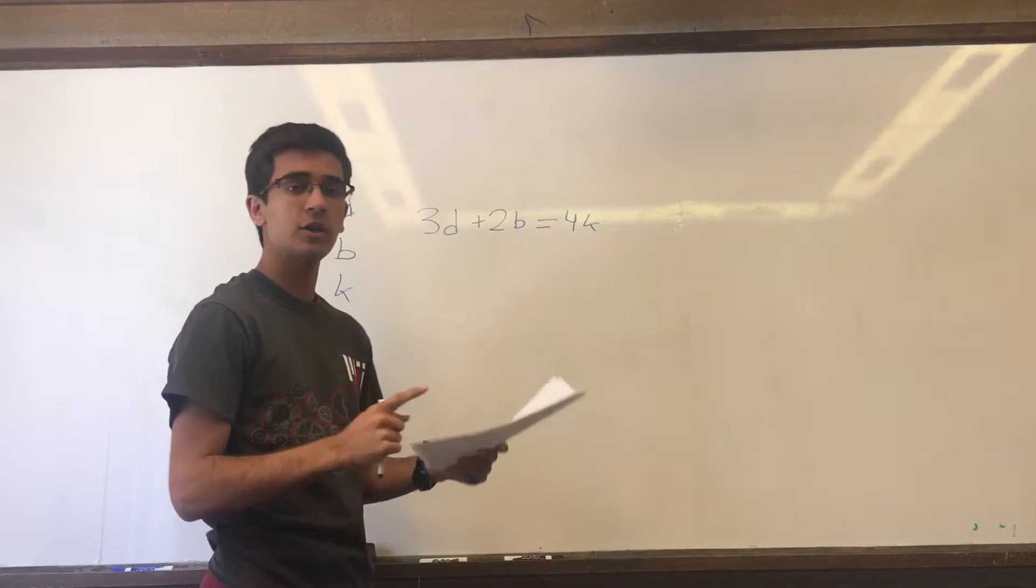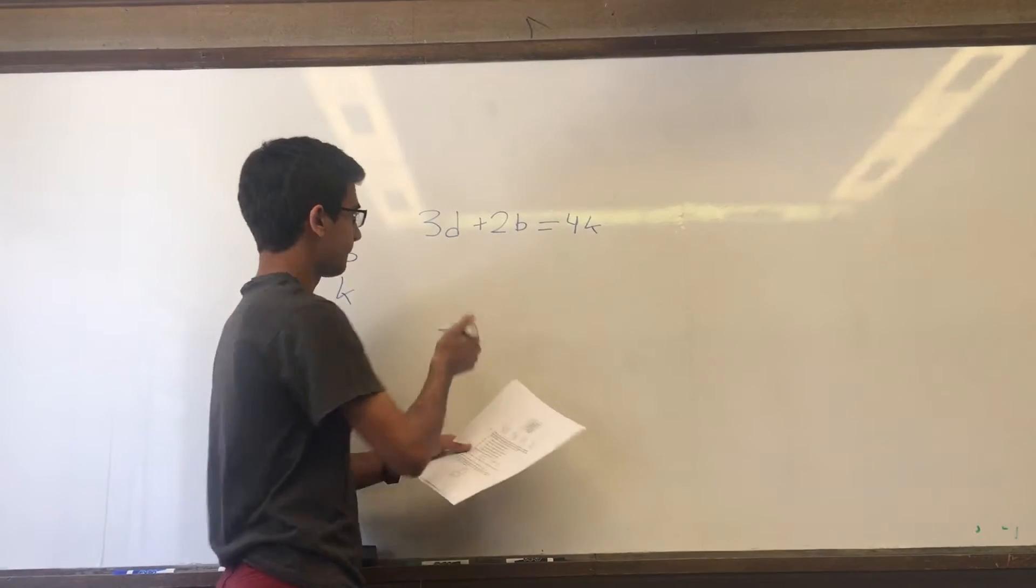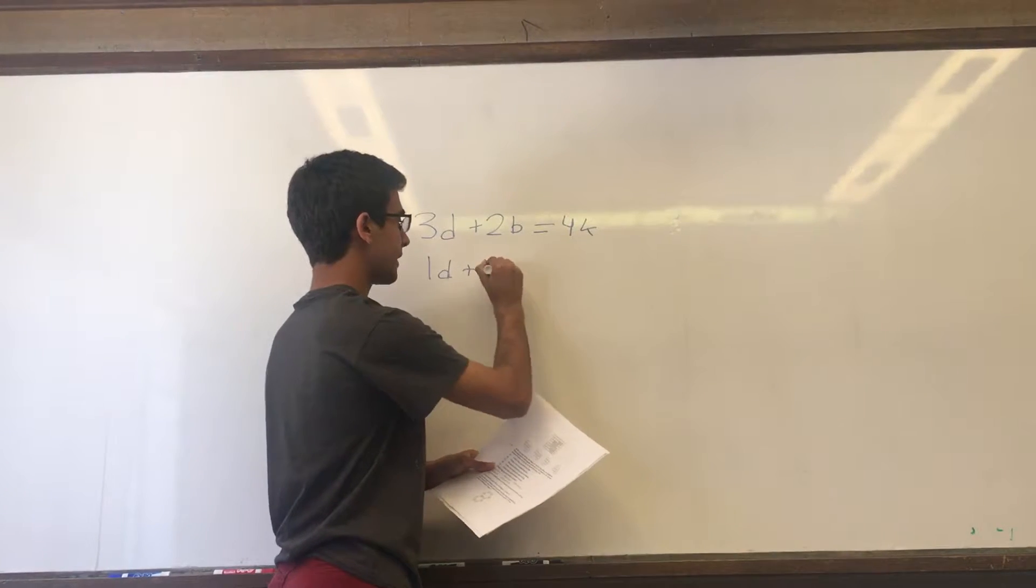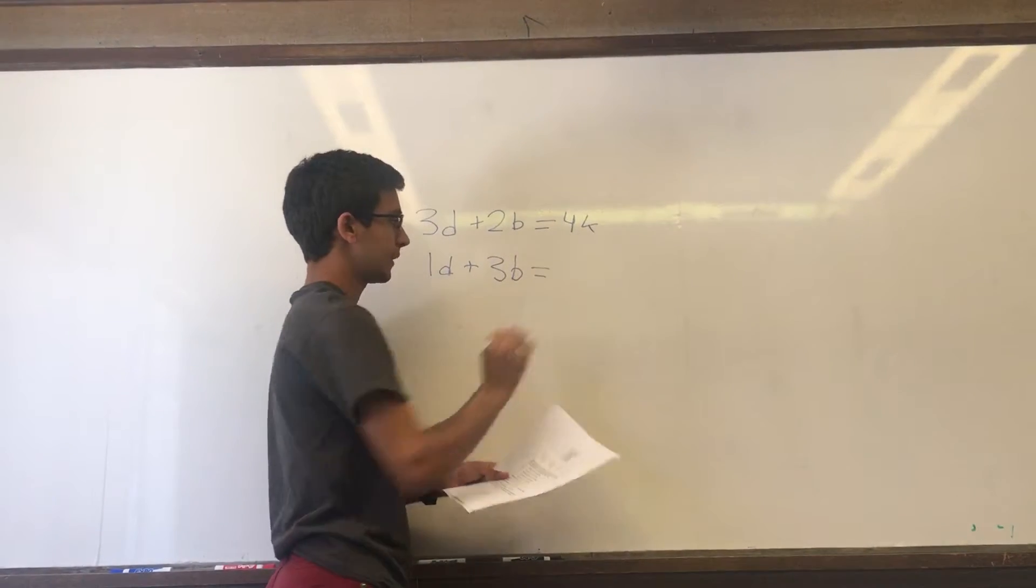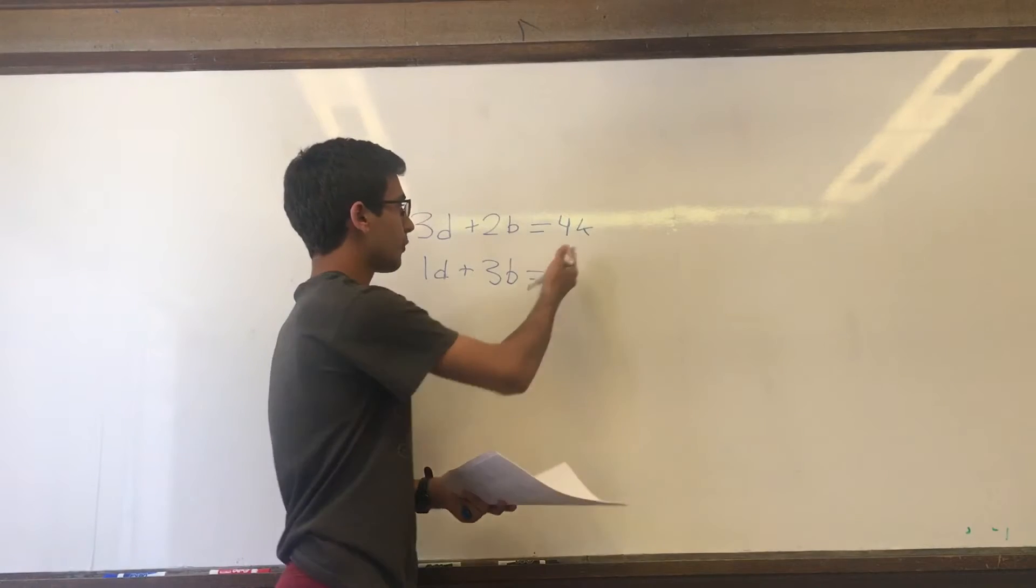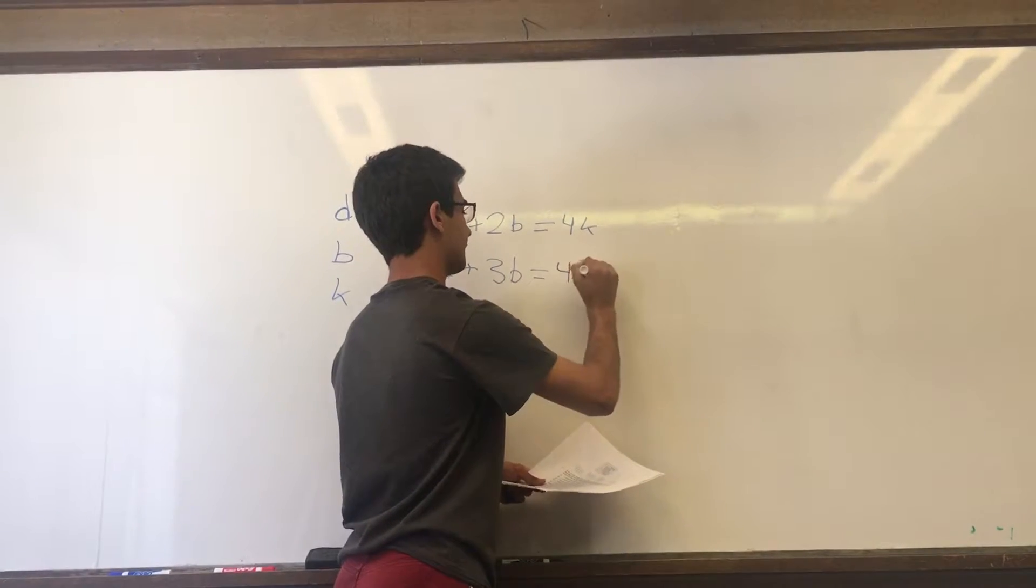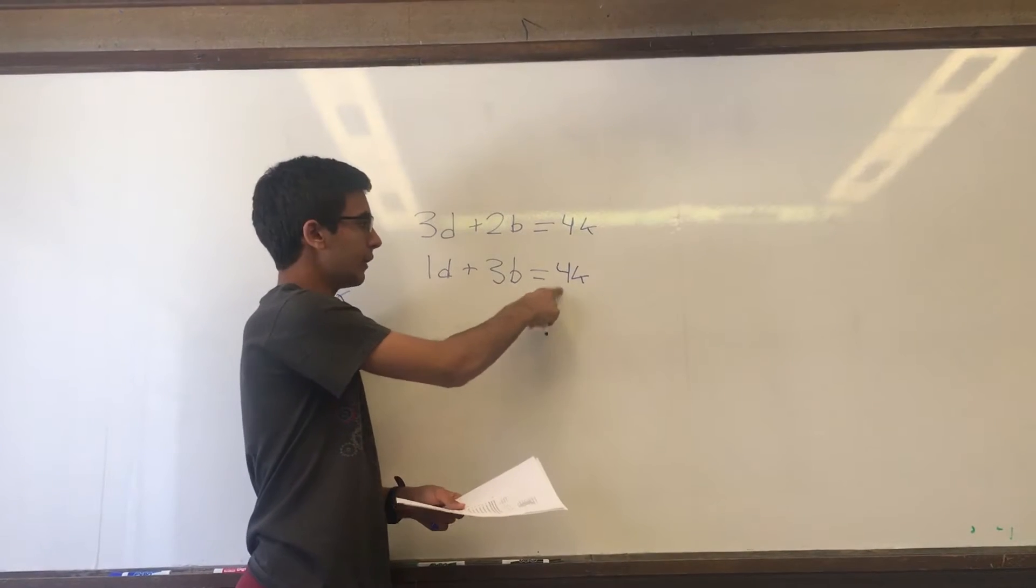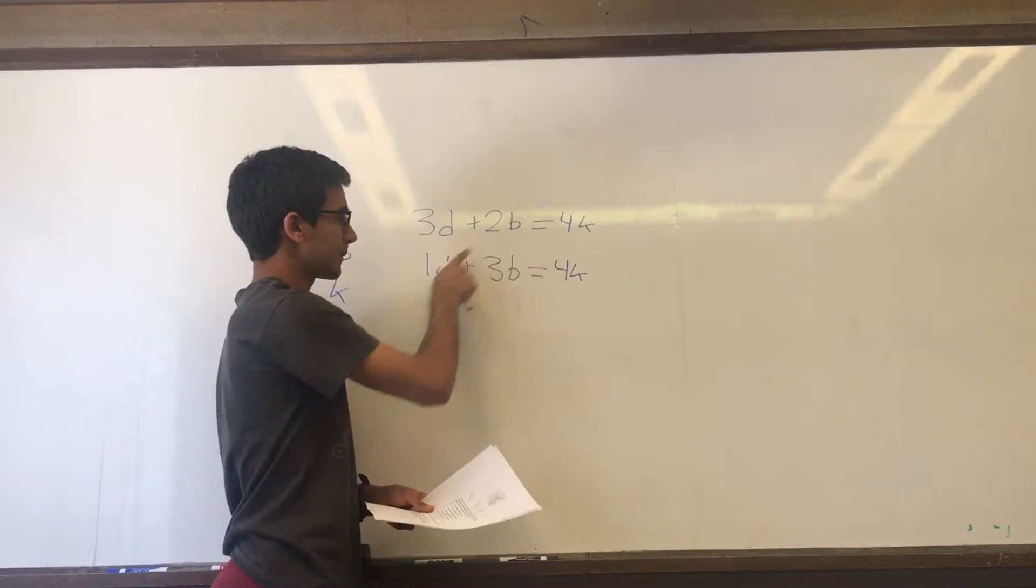So 1d plus 3 times b equals, for the same amount of money, 4k. Now because these two equations equal the same thing, 4k, we know that this must be equal to this.